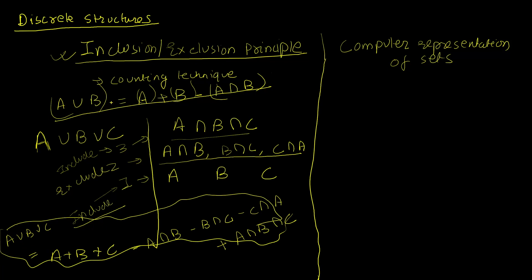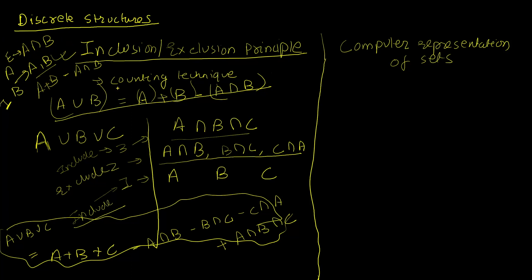Going back to our two-set example, A union B — did it really come from the inclusion-exclusion principle? Yes. If I take permutations of two, that gives one intersection: A ∩ B. The individual elements A and B are both included, and A ∩ B is excluded. So we get A + B - A ∩ B, which is exactly the formula.